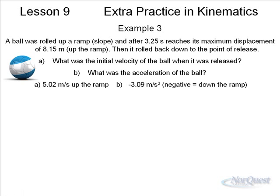So example number three. A ball rolled up a ramp after 3.25 seconds reaches its maximum displacement. It then rolled back down to the point of release. What's the initial velocity? What's the acceleration of the ball?